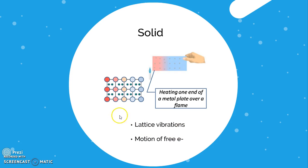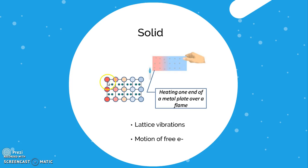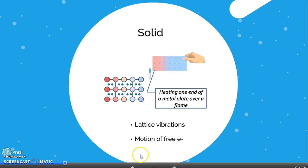In addition to lattice vibrations, in metals there is a second mechanism. Metals have free electrons, shown here as green dots. When the metal is heated, these free electrons get energized. Unlike the lattice atoms, there is no bonding restricting these electrons, so they move freely through the entire metallic body, carrying energy from one end to the other. This phenomenon is called motion of free electrons.